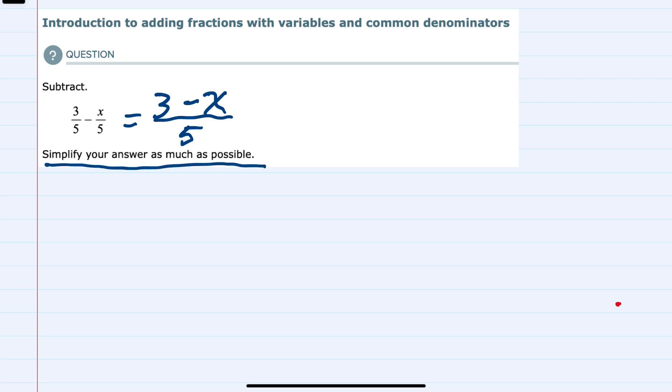In this case, there's nothing that we can do in the numerator. 3 subtract x. Those are not like terms. We can't do any combining. So our simplified solution is going to be 3 minus x over 5.